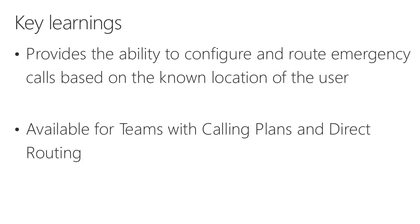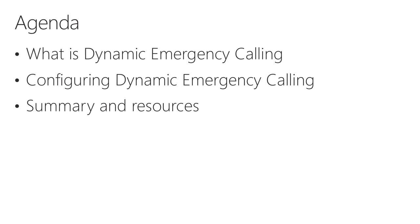In this session we're going to cover a couple of key learnings with regards to dynamic emergency calling. The first being that dynamic emergency calling provides the ability to configure and route emergency calls from Teams clients based on the known location of the user. This service is available for Teams both with calling plans as well as direct routing deployments. We'll start with what dynamic emergency calling is, then dig into configuration, and close with a summary and additional resources.